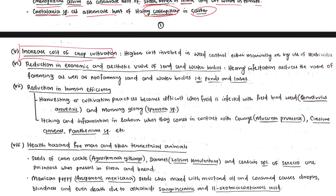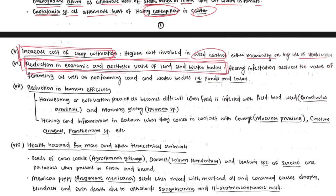Weeds increase the cost of production. If there is weed infestation, machinery cannot work properly and there are higher costs involved in weed control, either manually or through herbicide application. Weeds also reduce the economic and aesthetic value of land and water — heavy infestation of aquatic weeds in ponds or lakes reduces their aesthetic value.